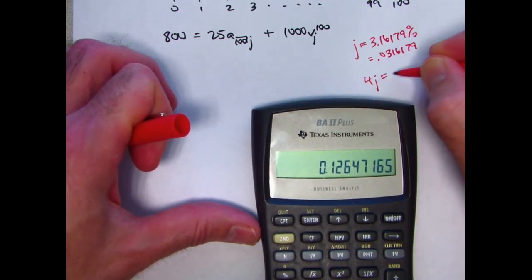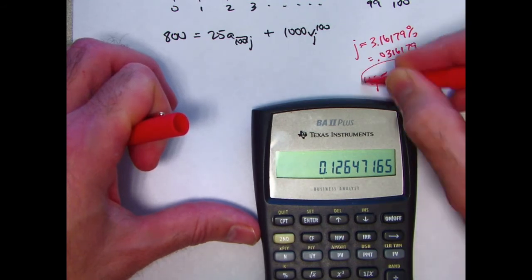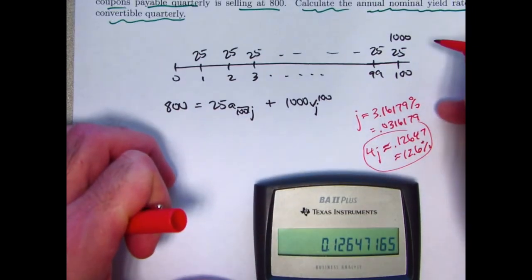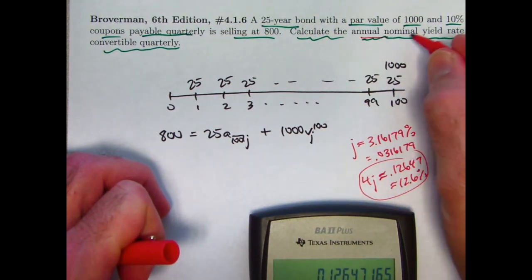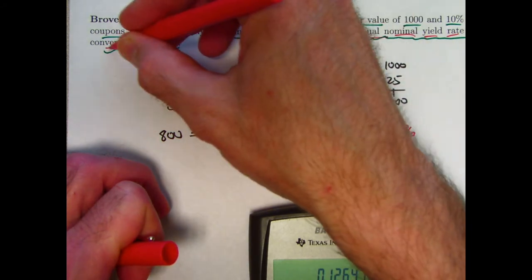4J, which is the final answer, is about 0.12647 or about 12.6%. That is correct—that's the final answer for the annual nominal yield rate convertible quarterly.